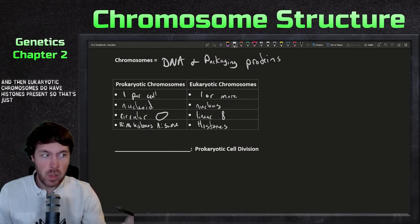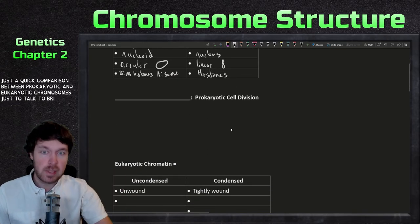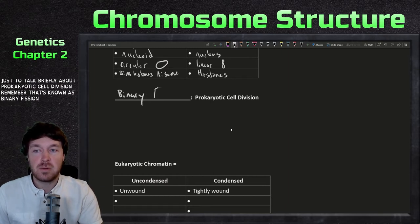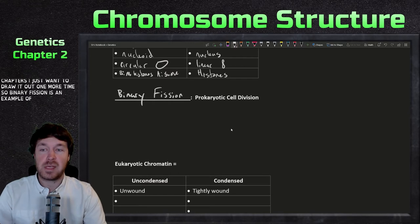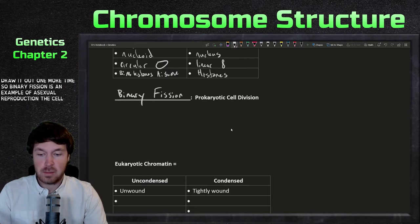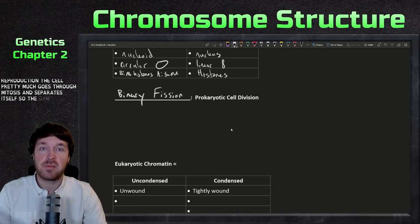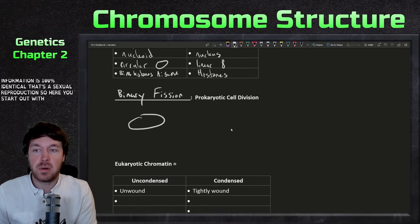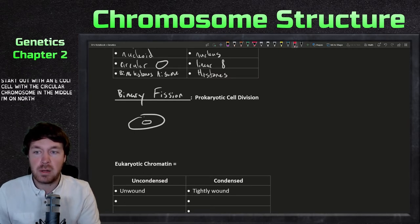That's a quick comparison between prokaryotic and eukaryotic chromosomes. To talk briefly about prokaryotic cell division: that's known as binary fission, which we covered last chapter. Binary fission is an example of asexual reproduction. The cell goes through a process and separates itself, so the genetic information is 100% identical. Here you start out with an E. coli cell with the circular chromosome in the middle.